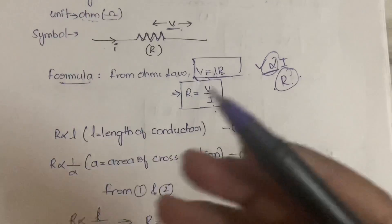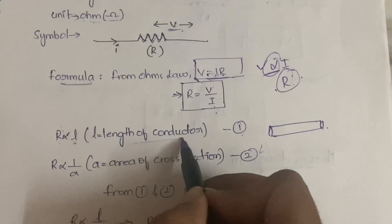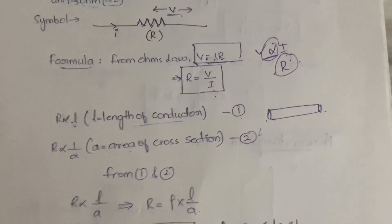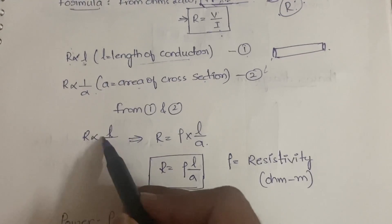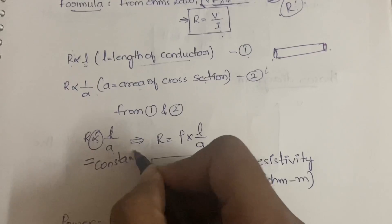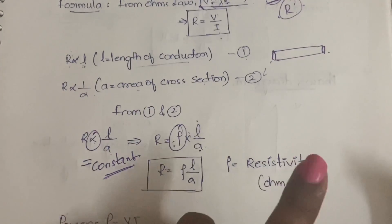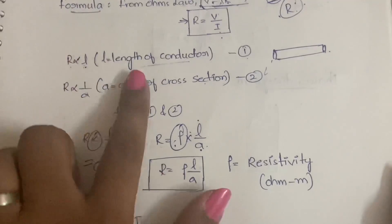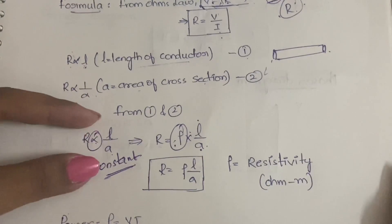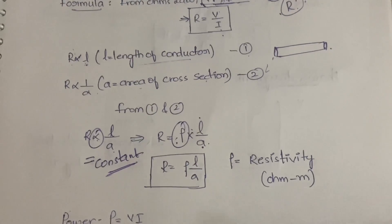For a conductor, resistance is directly proportional to its length and inversely proportional to its area of cross-section. Combining these, R is directly proportional to L over A. Removing the proportionality gives a constant called resistivity, denoted by rho. So R equals rho times L over A, where the unit of rho is ohm-meters.